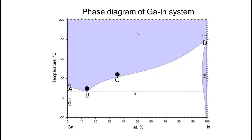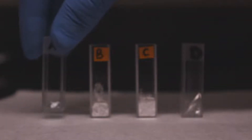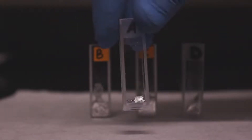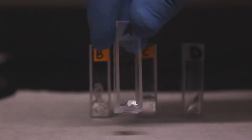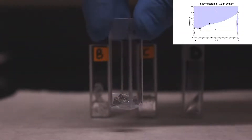This is the phase diagram of the gallium-indium system. As you can see, gallium melts around 30 degrees Celsius, which is close to room temperature, while indium melts around 157 degrees Celsius. We have prepared four different compositions.